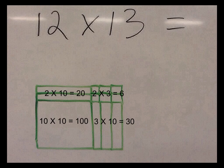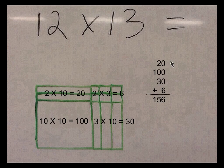3 times 10 is 30. 2 times 3 is 6. So there's our same four partial products all over. And again, 20 plus 100 plus 30 plus 6 gives us 156. And that's how you can solve it just using paper and pencil.